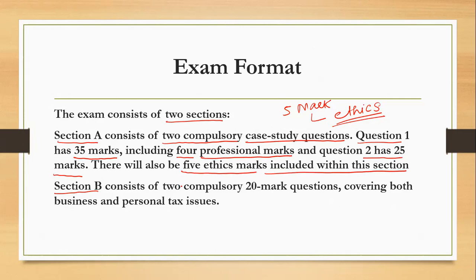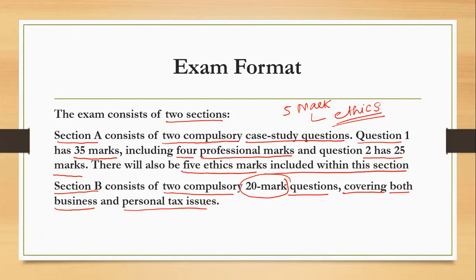As far as Section B is concerned, there are two questions each worth 20 marks, covering all aspects of taxation — both business and personal taxation issues. Section B questions are not overly detailed, so it is always advisable for students to start from Section B and try to solve at least one question. During our course I will give you suggestions on what is the ideal way to start — whether from Section A or Section B — and how to deal with the paper.